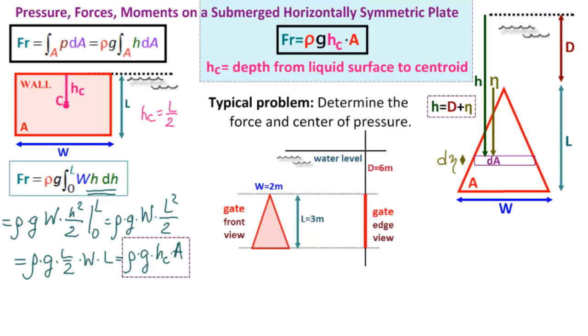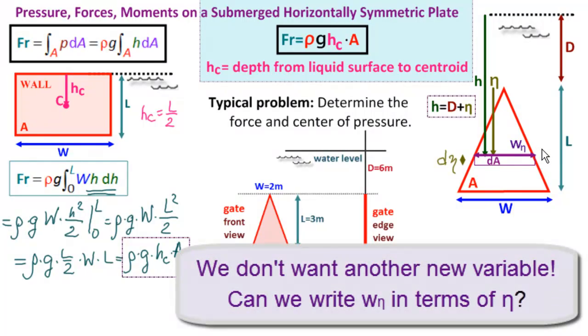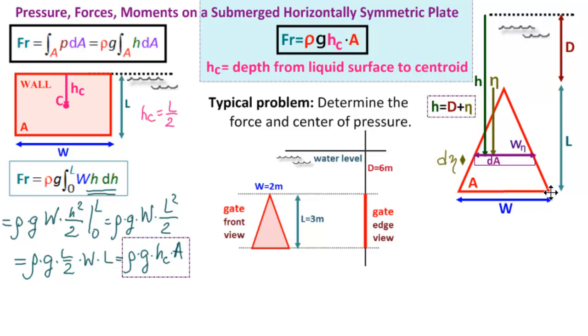The width over here was constant because this is rectangular. But the width here is zero at the top and W at the bottom. And we can see that it depends on eta. So how do we write that down? We'll write that as width is W eta. Now for sure we don't want another variable. So we have to find a way to describe W eta in terms of eta and things we know. Can we do that? And the answer is triangles, similar triangles.